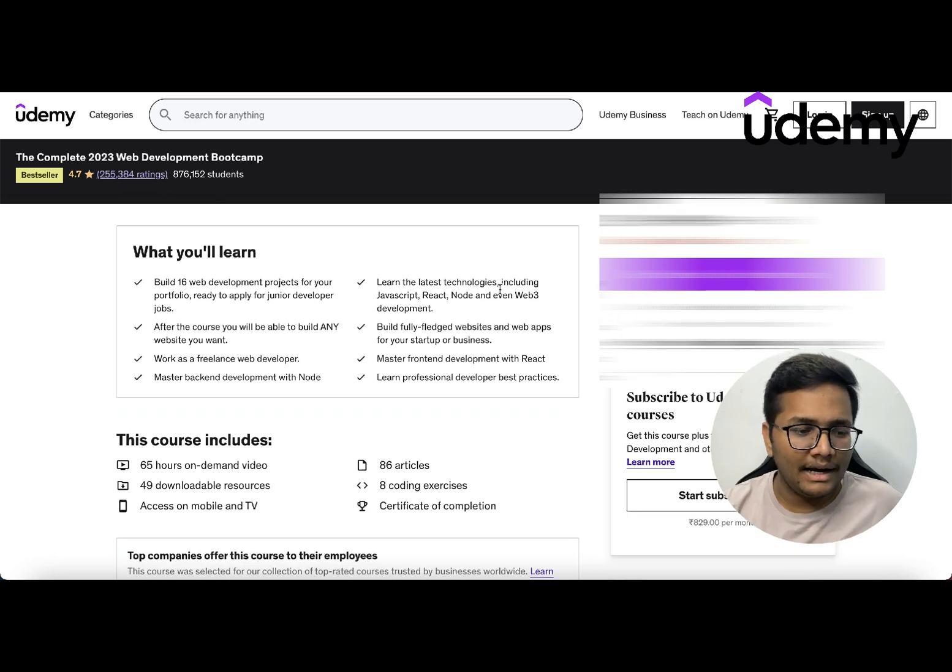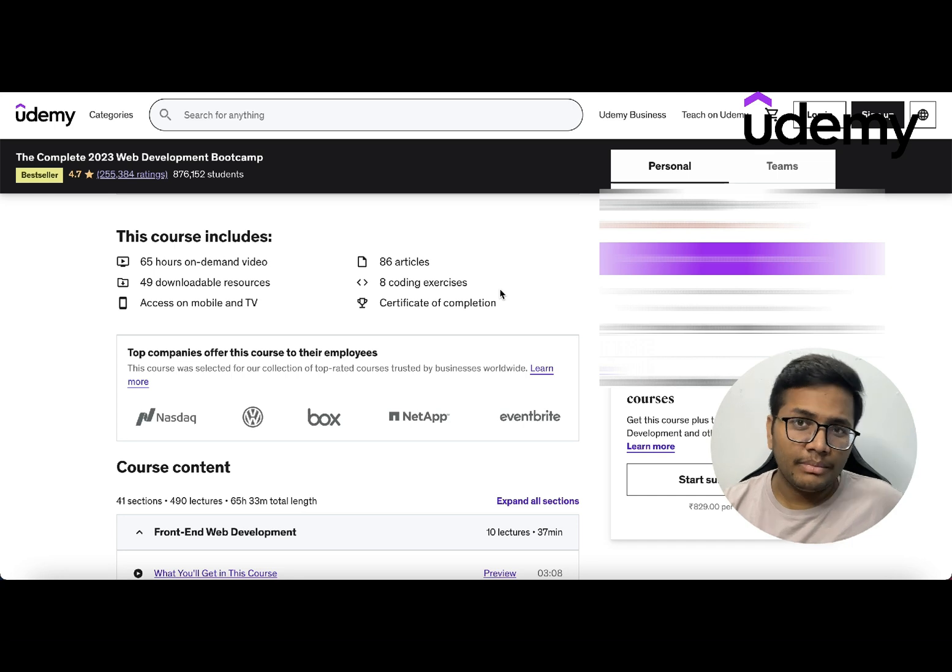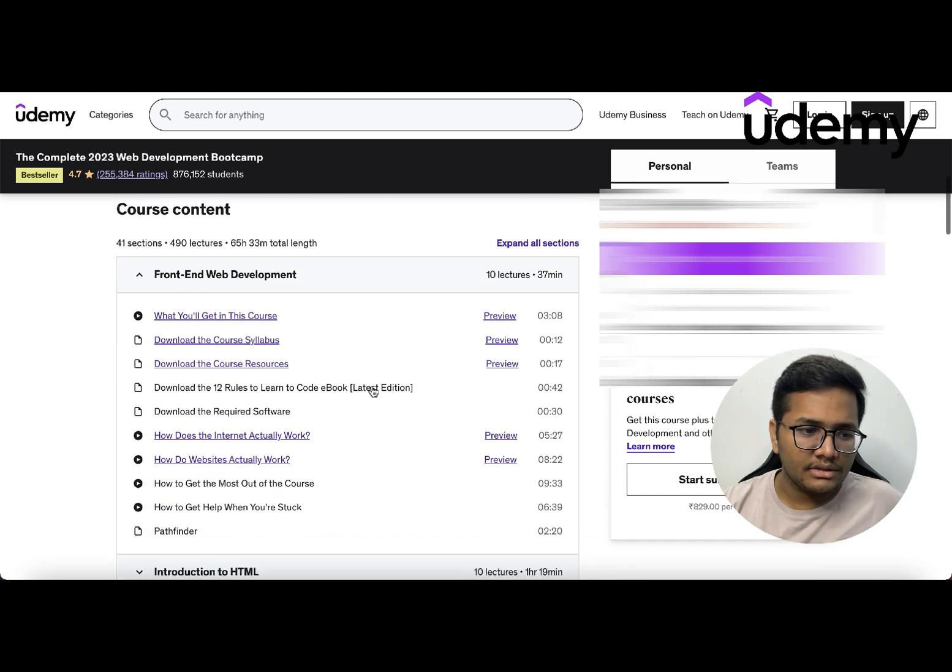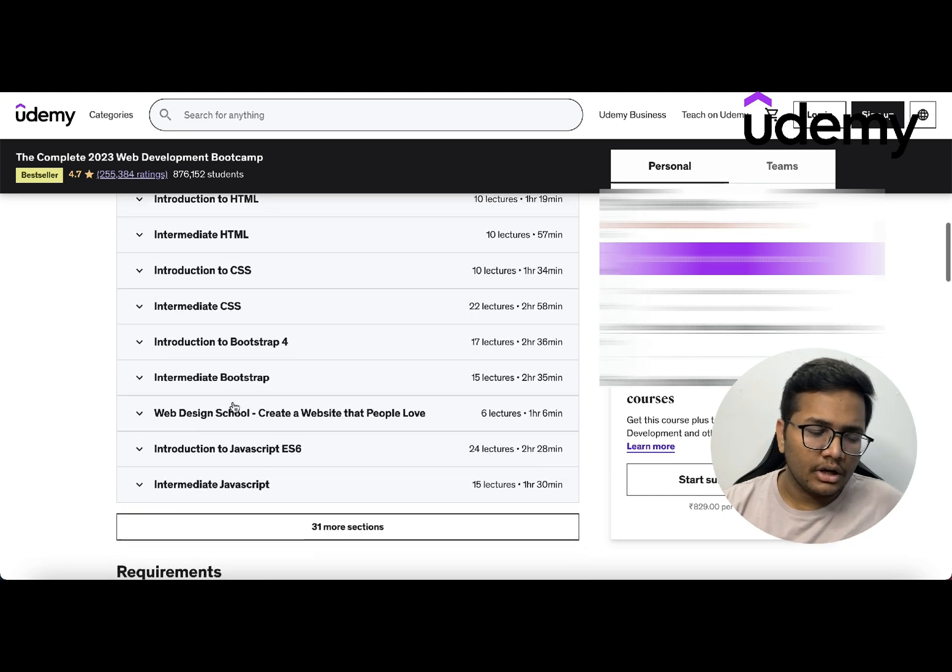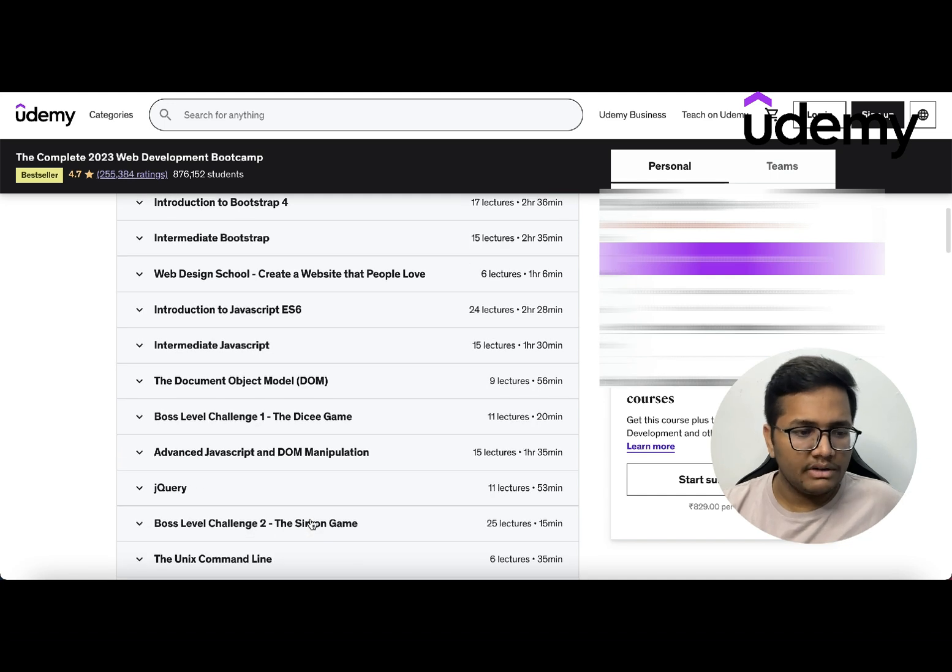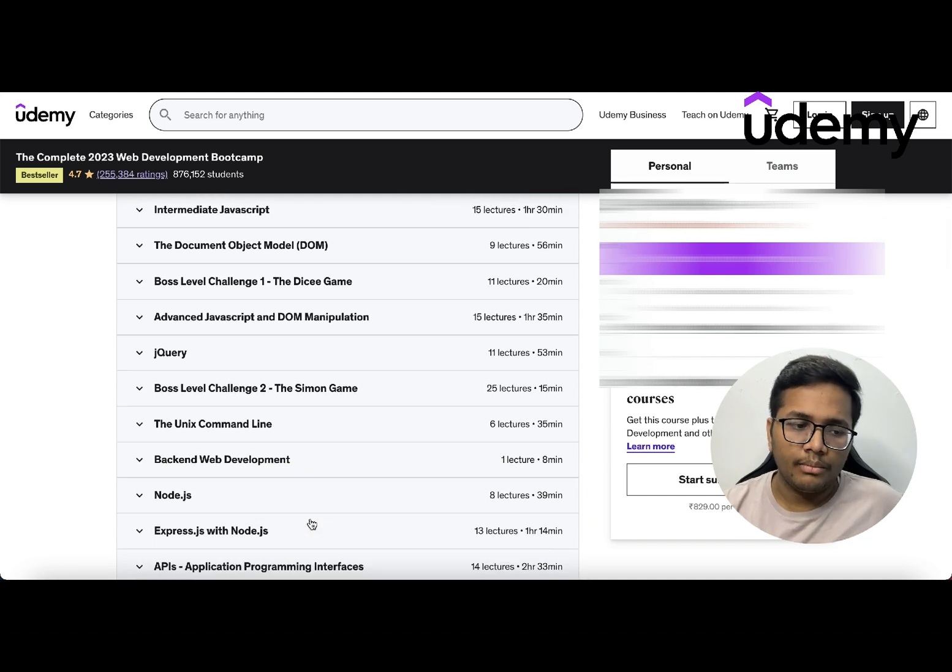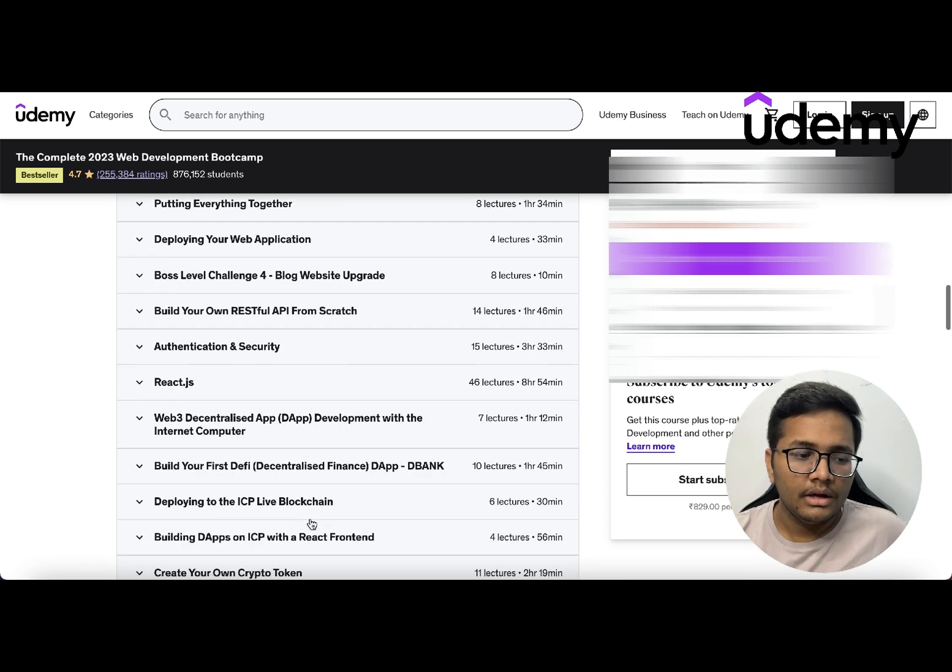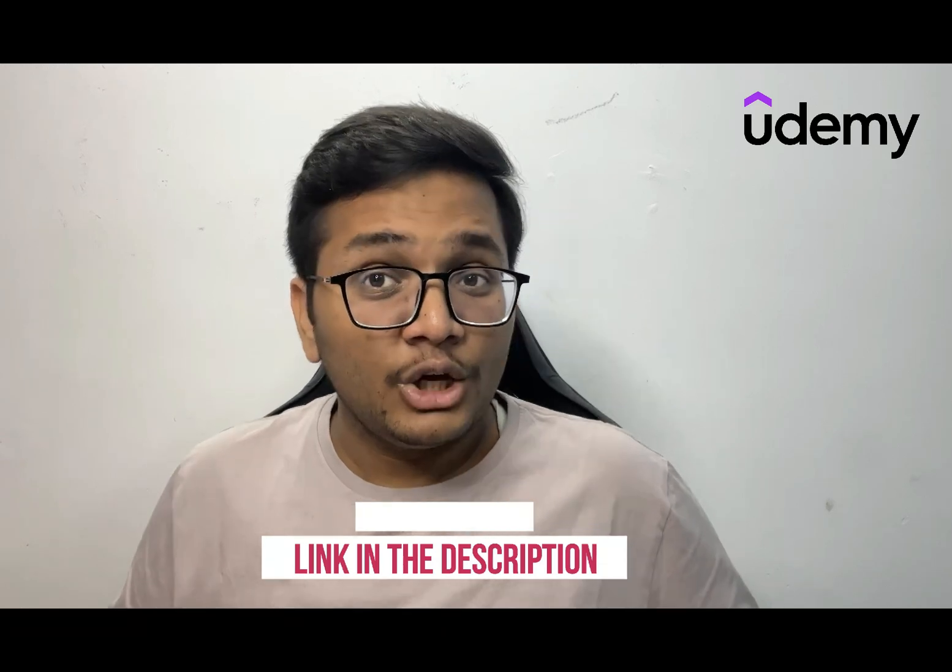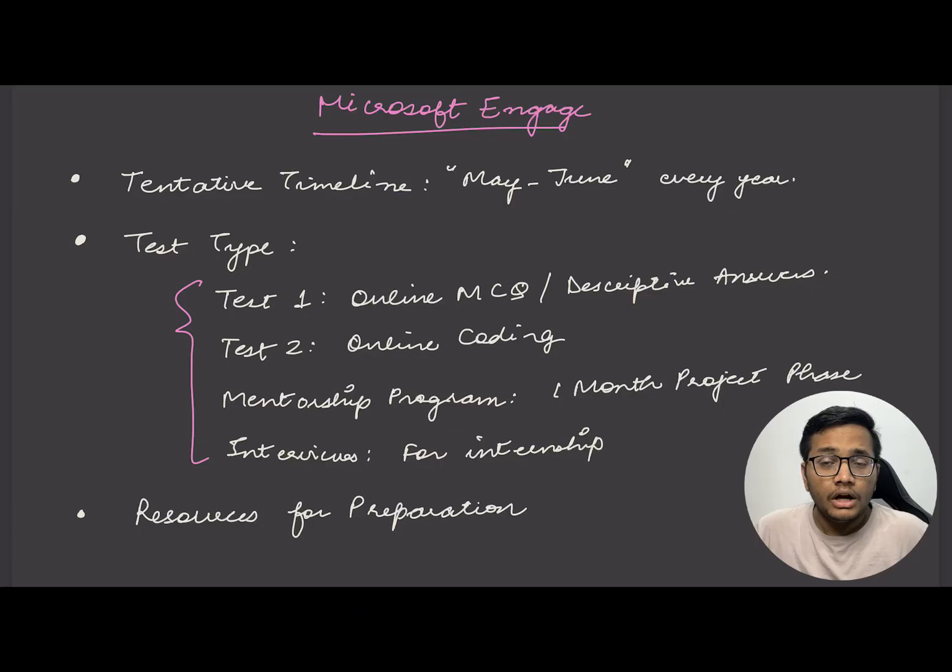This course involves 65 hours of on-demand video, 49 downloadable resources, 86 articles, 8 coding exercises, and access on mobile and TV with a certificate of completion. It covers front-end development including HTML, CSS, Bootstrap, JavaScript DOM models, Unix command line, back-end web development with Node.js, APIs, Git, GitHub version control, databases, and SQL. This course is suitable for new programmers to experienced programmers. Check out the link in the description for exclusive prices.